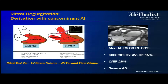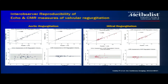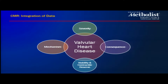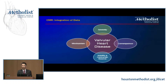In terms of serial assessment and reproducibility of regurgitant volume, CMR holds a marginal advantage over echo. The r-value for CMR is 0.99 compared to 0.88 and 0.94 for echo, for aortic versus mitral regurgitation respectively. Beyond severity quantification via regurgitant volume, we can also evaluate regurgitant fraction and chamber enlargement as a consequence.